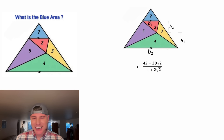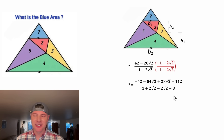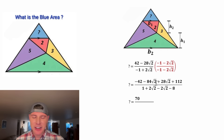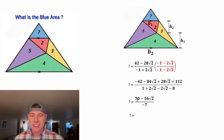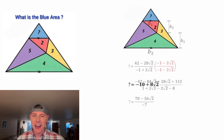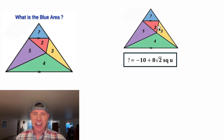And now we have the answer for our question mark. Let's rationalize the denominator by multiplying top and bottom by the conjugate of the denominator. This times this gives us all of this on top, and on bottom this times this gives us all of this. Let's combine: negative 42 and positive 112 gives us positive 70, and negative 84 root 2 plus 28 root 2 is negative 56 root 2. On the bottom, the positive 2 root 2 and negative 2 root 2 cancel, leaving 1 minus 8, which is negative 7. Dividing each coefficient by negative 7: 70 divided by negative 7 is negative 10, and negative 56 root 2 divided by negative 7 is positive 8 root 2. In this given diagram, the area of the blue triangle is equal to negative 10 plus 8 root 2 square units.